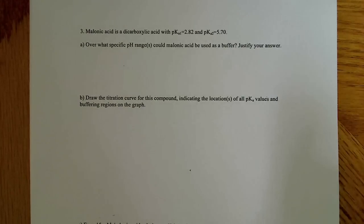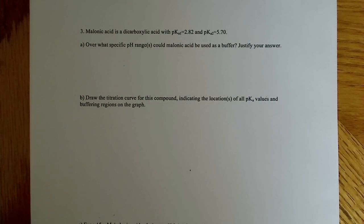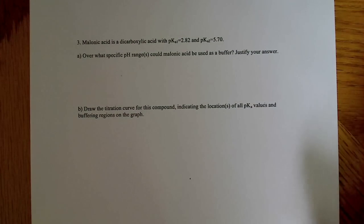Now, this is a three-part question, and I don't want to draw the titration curve at this point because I'm going to do a complete video just on titration curves. But I will answer the first question because I think it's kind of important to understand about buffers. And it says over what specific pH ranges could melonic acid be used as a buffer? And justify your answer. Well, there's not really much to this. I just want to kind of give the basic generalization of how to go about thinking about this. Well, it shows up here that melonic acid is a diacarboxylic acid with a pKa of 2.82 and a pKa2 of 5.7.